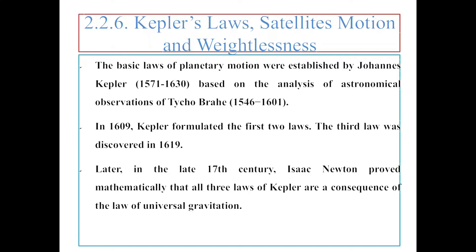In this section we will see Kepler's Law, Satellite Motion, and Weightlessness. The basic laws of planetary motion were established by Johannes Kepler between 1571 and 1630, based on the analysis of astronomical observations by Tycho Brahe from 1546 to 1601. In 1609, Kepler formulated the first two laws; the third law was discovered in 1619. Later, in the late 17th century, Isaac Newton proved mathematically that all three of Kepler's laws are the consequence of the law of universal gravitation.